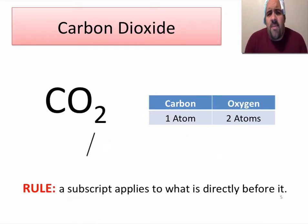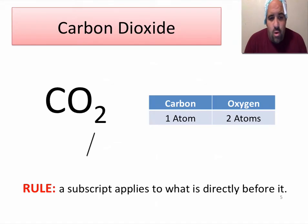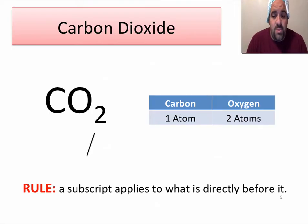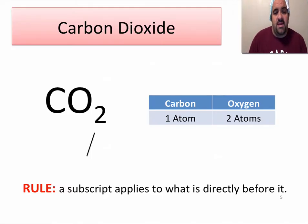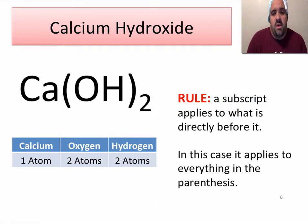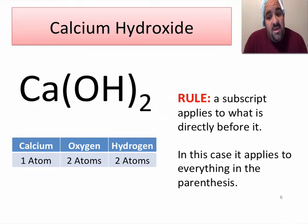When we have carbon dioxide — that greenhouse gas that our cars are emitting, causing global warming and climate change — the two applies to the oxygen because the oxygen is what is directly before it. It comes right before the two. So there's one carbon atom and two oxygen atoms in carbon dioxide. The rule is that the subscript applies to what's directly before it.